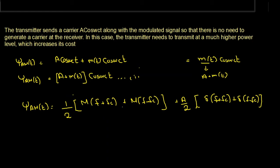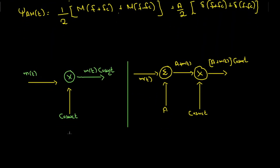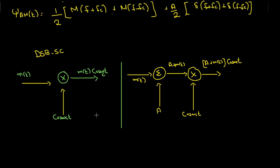The value A must be some positive value. On the left side is the block diagram of double sideband suppressed carrier, and on the right is the block diagram of AM with carrier. In the AM case, we add A to m(t) and then pass it to the mixer, resulting in (A + m(t))·cos(ωct).